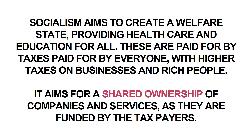To sum up, socialism aims to create a welfare state providing things like health care, education, and social workers, paid for by taxes that everybody pays — but higher taxes are on businesses and rich people. It is aiming for a shared ownership of companies and services as they are funded by the taxpayers. In capitalism, the factory owner like Mr. Burling would take the profit. In socialism, when there is profit, it would be reinvested within that service to improve it, rather than split off and given to individual members.